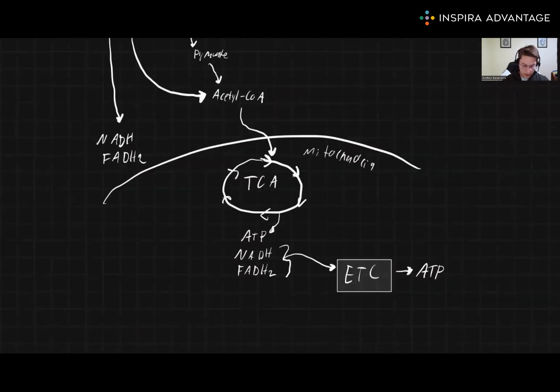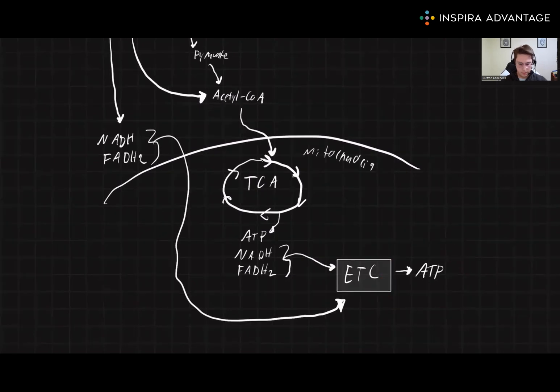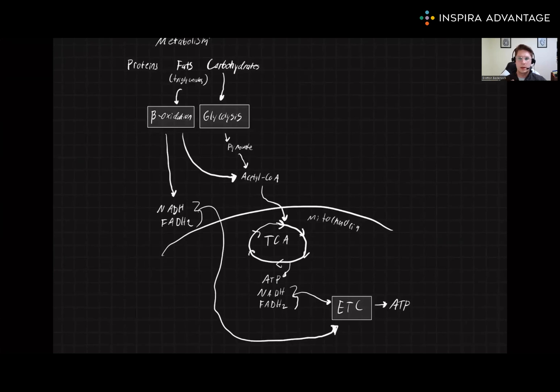Now, we know what our NADH and FADH2 are going to do. They are going to go right on in to the electron transport chain again to make ATP. This is the name of the game. This is what we're trying to do. Carbohydrates, ultimately, they're going to be metabolized into ATP. Fats, they're going to be metabolized and turned into ATP.